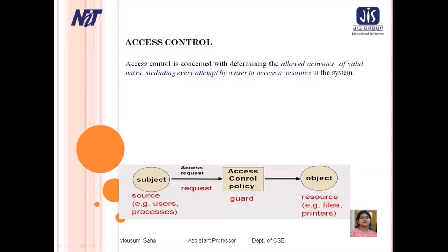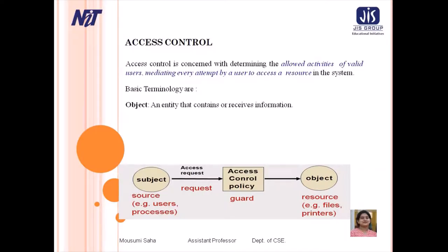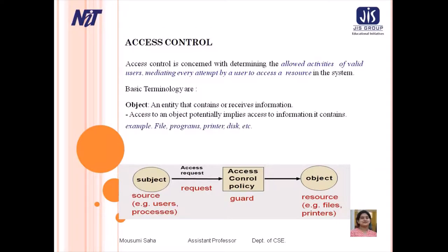A computer implemented under the principle of least privilege can be limited by running only specified services and accessing only specific remote hosts. For example, Windows 2000 has a complex protection scheme at its core yet has many security holes. The basic terminologies here include the object — an entity that contains or receives information. Accessing an object potentially implies access to the information in its contents. Examples include files, programs, printers, and disks.